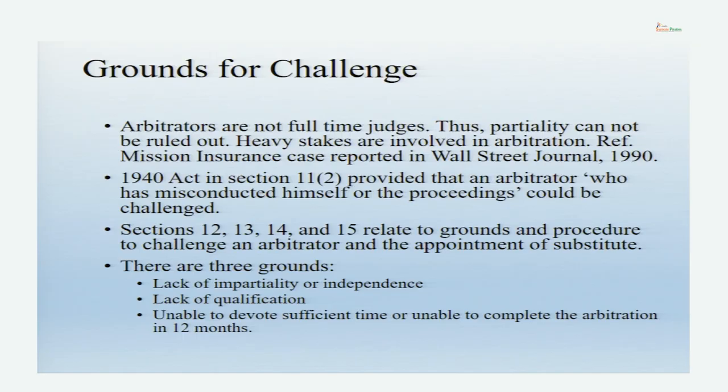In the year 1990, there was a case reported in the Wall Street Journal called the Mission Insurance Case, in which a huge award was turned down only on the ground that one of the arbitrators was seen spending time with one of the parties. The conclusion was that there is no appearance of justice. Whether bias actually operated against a party is not the test — the very thought that bias must have operated is sufficient to make the whole process bad.